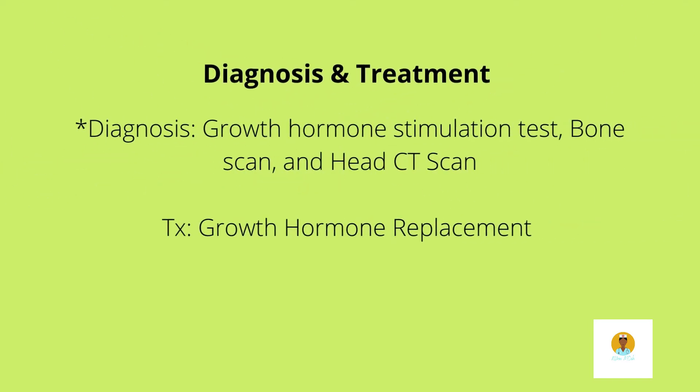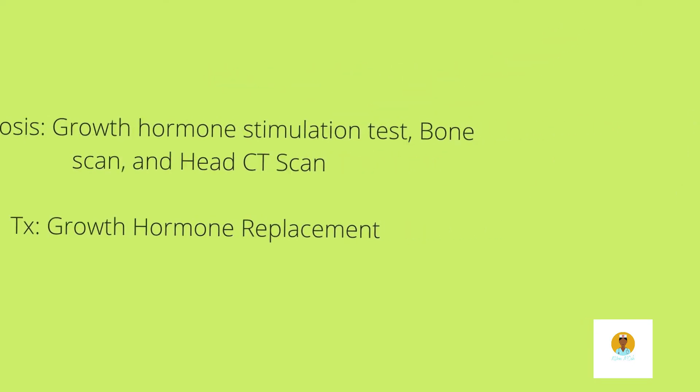For diagnosis, we can do a growth hormone stimulating test. We can also do a bone age scan and a CT scan of the patient's head to check for abnormalities in the pituitary gland or the hypothalamus. For treatment, we provide the patient with growth hormone replacement, for example somatotropin. It is administered subcutaneously. We stop the somatotropin once the x-ray shows epiphyseal closure, and x-rays will be done throughout the treatment so we don't miss the mark of epiphyseal closure.